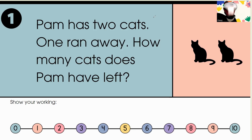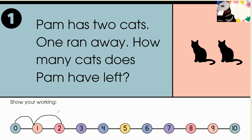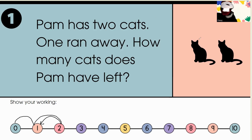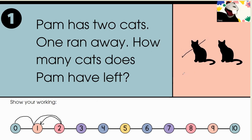I'm going to think, and I'm going to use the number line. Pam had two cats! And then, unfortunately, one ran away — I have to go back on the number line. One went away! I know what the problem is! Pam has two cats, and you have to take away one cat, because it ran away!